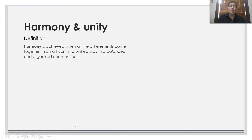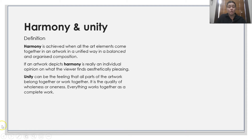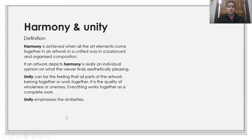Harmony and unity. Harmony is achieved when all the art elements come together in an artwork in a unified way, in a balanced and organised composition. If an artwork depicts harmony, it really is an individual opinion about what a viewer finds aesthetically pleasing. Unity can be the feeling that all parts of the artwork belong together or work together — it's the quality of wholeness or oneness. Everything works together as a completed piece. Unity emphasises the similarities.